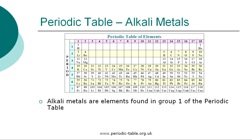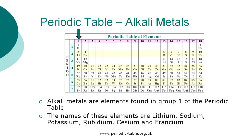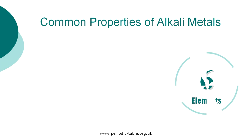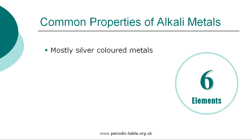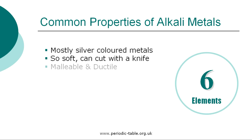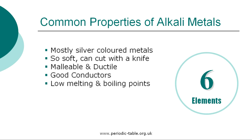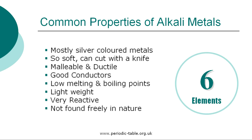The six elements classified as alkali metals are found in group one of the periodic table: lithium, sodium, potassium, rubidium, cesium, and francium. The alkali metals are silver colored except for cesium, which is pale gold. Alkali metals are so soft that they can be cut with a knife. They are malleable, ductile, and are good conductors of heat and electricity. They have low melting and boiling points compared to most other metals, and their light weight and physical properties separate them from other metals. Elements classified as alkali metals are very reactive metals that do not occur freely in nature.